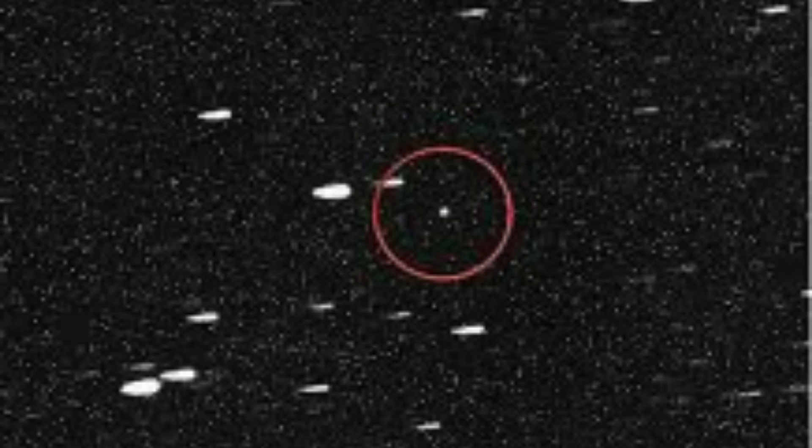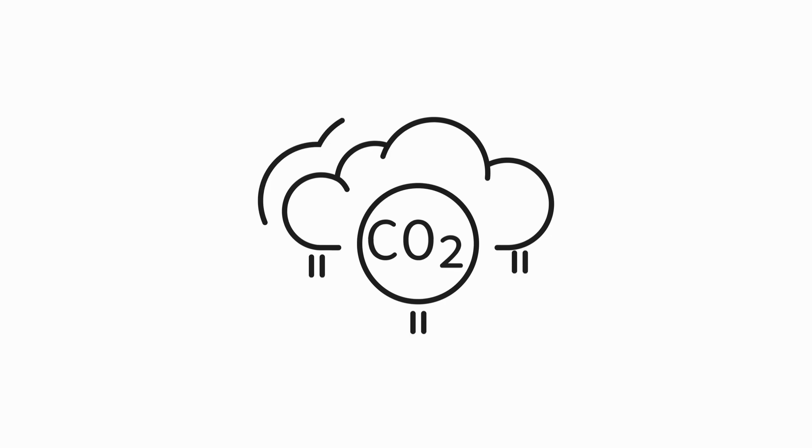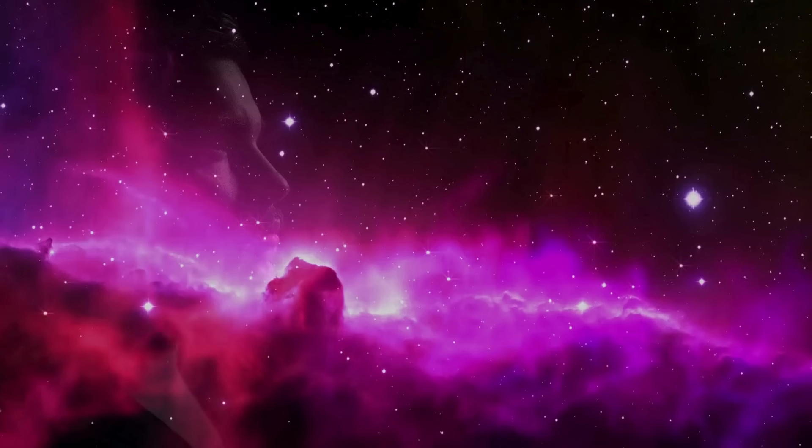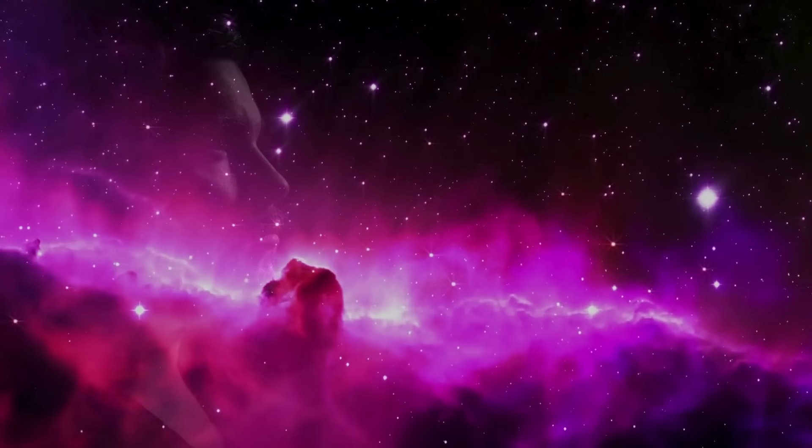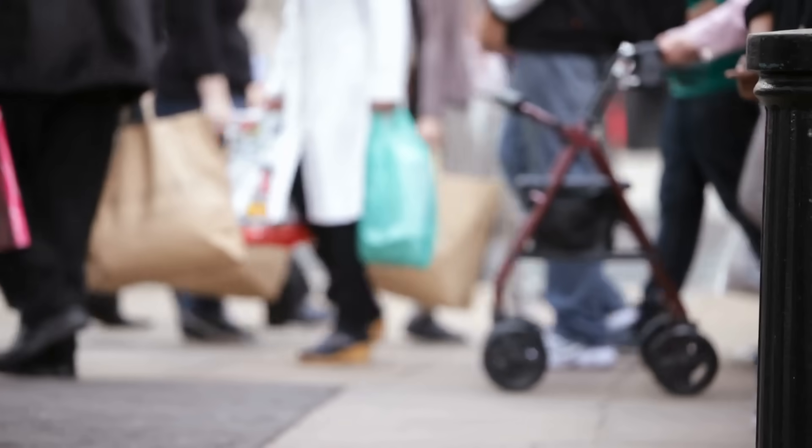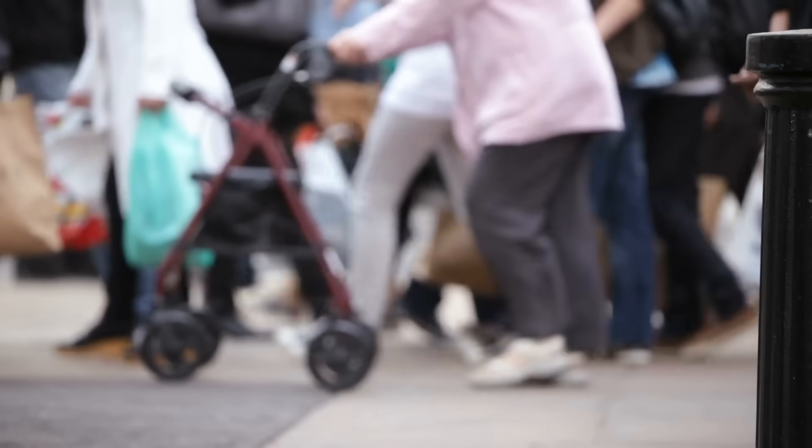3I-Atlas continues this tradition, but with a modern twist. Its data, carbon dioxide ratios, nickel lines, orbital paths, replaces prophecy with precision. Yet the questions it raises are as old as humanity.